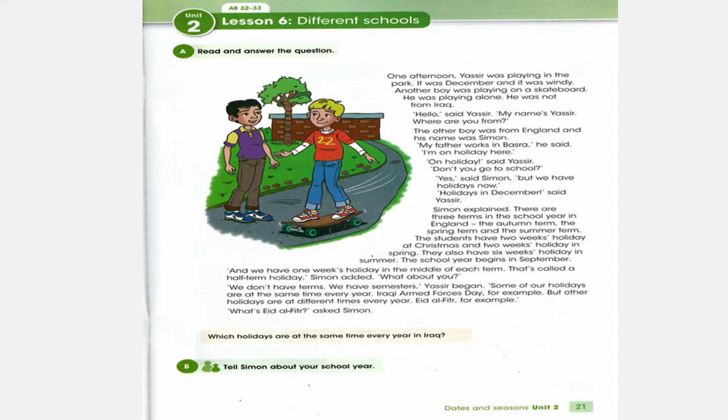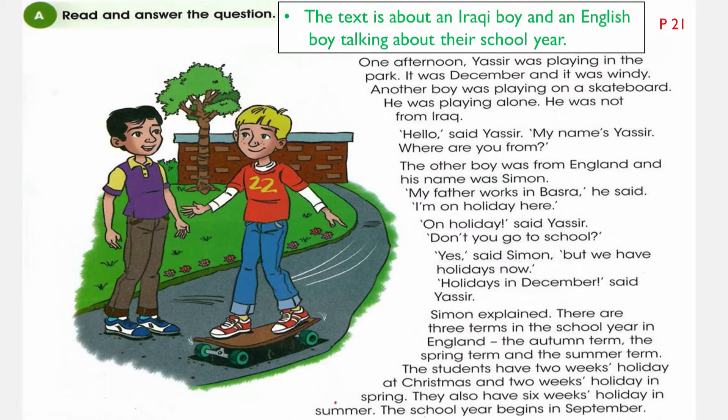Dear students, open your book to page 21 of the student's book. Here we have a text about an Iraqi boy and an English boy talking about their school year. This text is about an Iraqi boy and an English boy talking about the school year in each country. The boy from England is Simon, and Yasr is from Iraq. Let me read the lesson for you, so pay attention.